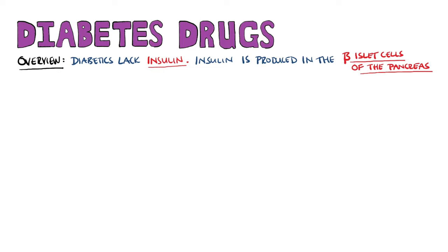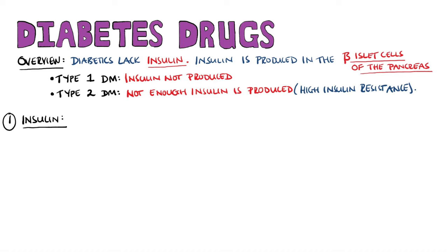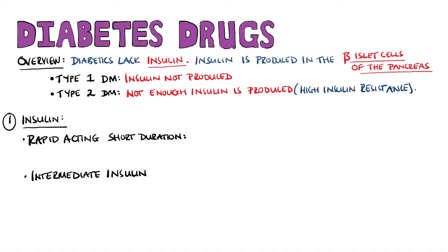Type 1 diabetics are unable to produce insulin, while type 2 diabetics can produce it but not enough to achieve the desired glucose-lowering effect due to their high insulin resistance. This means different therapies can be used for these two forms of diabetes. Let's start with insulin itself, which is given to all patients with type 1 diabetes. There are several types, including rapid-acting short-duration insulin, intermediate insulin, and long-acting insulin.